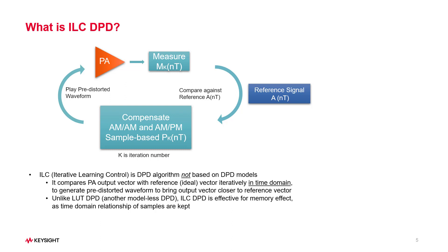Iterative Learning Control DPD allows the modeling of any memory effect without increasing the complexity. Since any pre-distorted value P at time T depends only on the measured sample, the memory effect of the device is present in the measured samples. Our approach is to pre-distort each individual sample so that the output signal comes as close to the original signal as possible. It is obvious that a single execution of this step is not sufficient, especially when the power amplifier shows significant memory effects or significant nonlinear behavior.